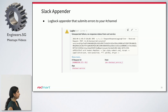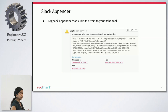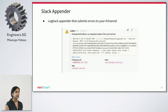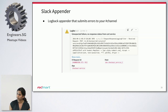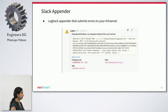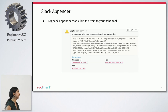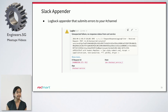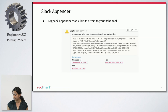One other way the microservice library alerts you if anything goes wrong is through a Slack appender. What this does is that you can configure your service to send you a Slack notification on a particular channel whenever there's a log message which crosses a particular threshold. For example, if there's ever an error logged in your service, you can get a Slack notification for it.